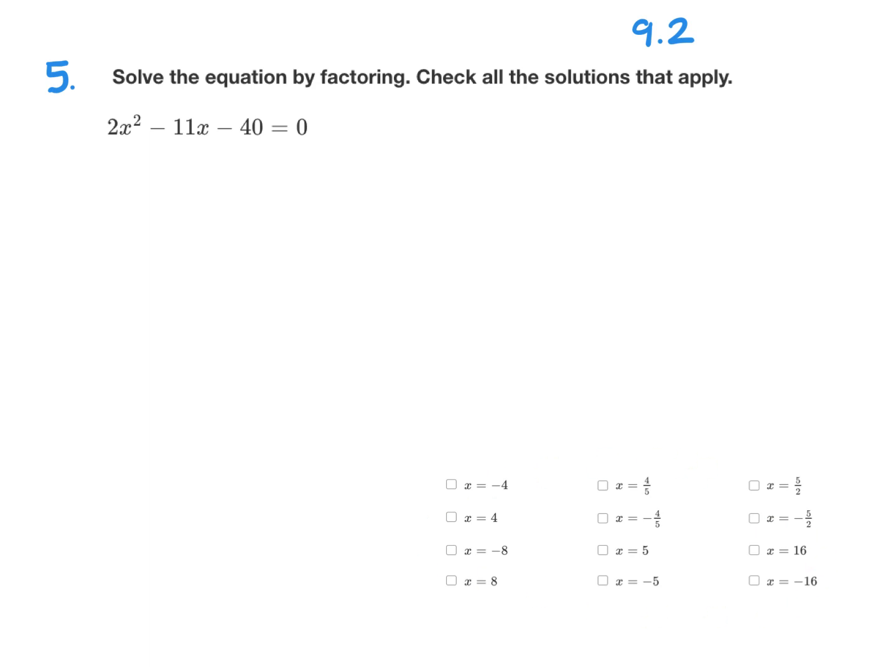First, notice that this equation is already set equal to zero, but my a value is not 1, so I can't use the x method. Let's check if there might be a greatest common factor. Well, 2 does not divide into 11. So since there's no GCF and a is not equal to 1, we need to use the slide method.